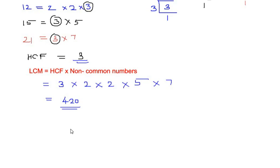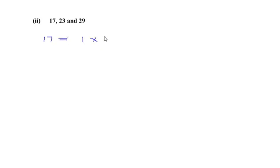Now let's look at the next sub-question: find the LCM and HCF of 17, 23, and 29. These are all prime numbers, so they have only 1 and themselves as factors. So for 17, the factors are 1 and 17 itself.